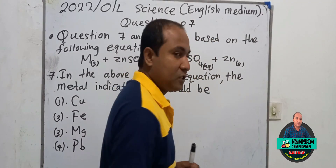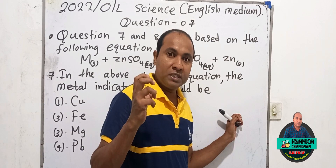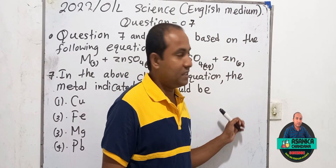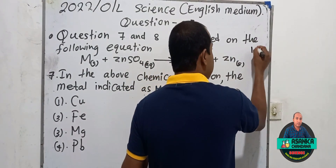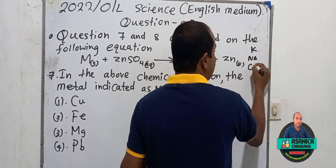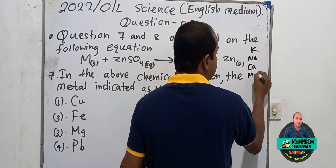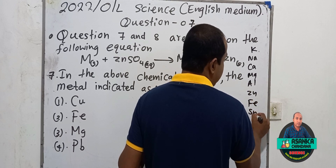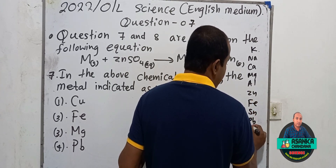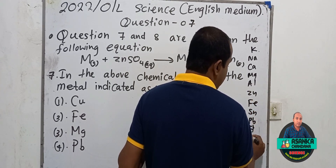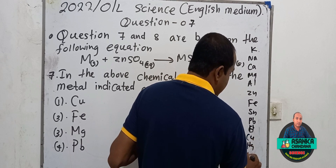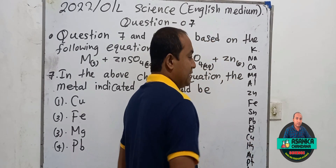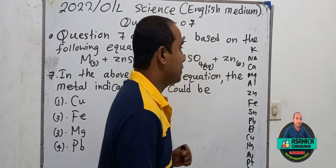To find the answer for this question, we should use the reactivity series. The reactivity series is: potassium, sodium, calcium, magnesium, aluminium, zinc, iron, tin, lead, hydrogen, copper, mercury, silver, platinum, gold.